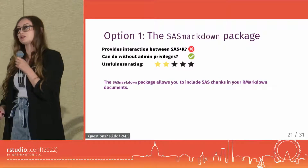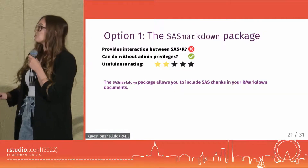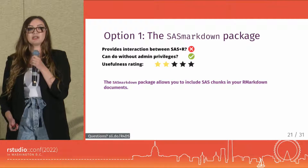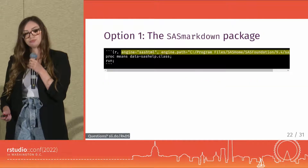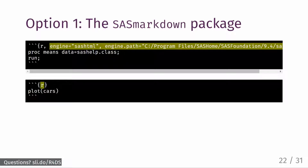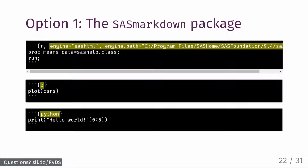Once you have the SAS Markdown package installed, it's fairly easy to switch between the three languages within your R Markdown or Quarto documents. All you need to do is specify which language you'd like to use in each individual code chunk. If you want to use SAS, set the engine option to sasHTML. You can set the engine.path option to be the file path to your SAS executable. To use R, leave the chunk header as the default. And to use Python, set the chunk header to say Python.